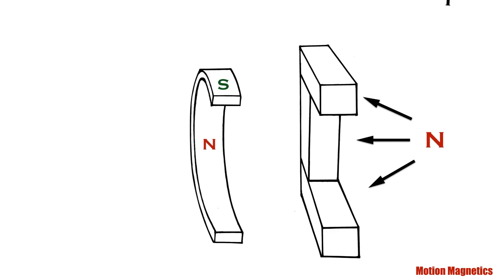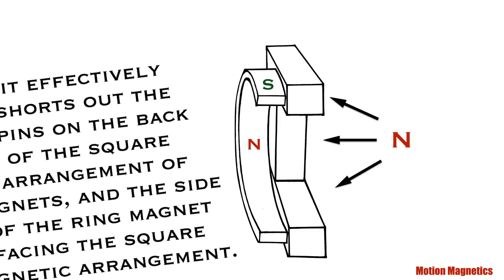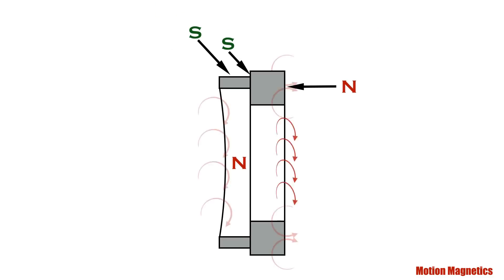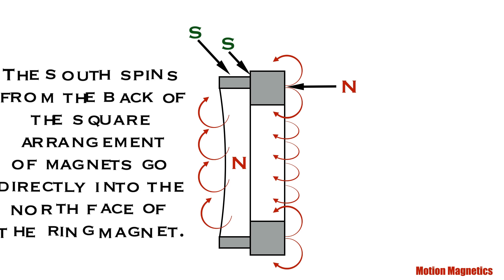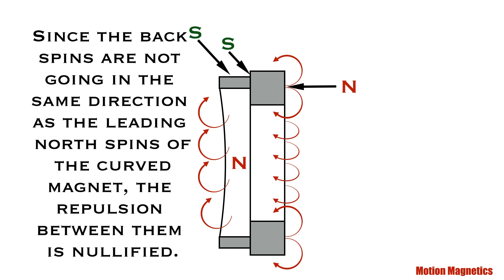Placing the two magnetic structures together alters their electron spin patterns. It effectively shorts out the spins on the back of the square arrangement of magnets and the side of the ring magnet facing the square magnetic arrangement. The south spins from the back of the square arrangement of magnets go directly into the north face of the ring magnet.